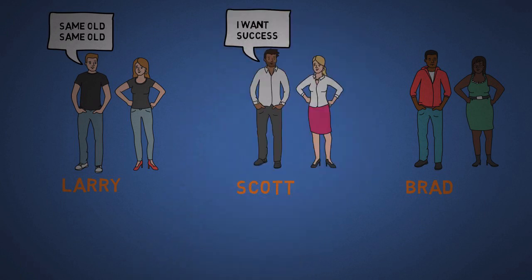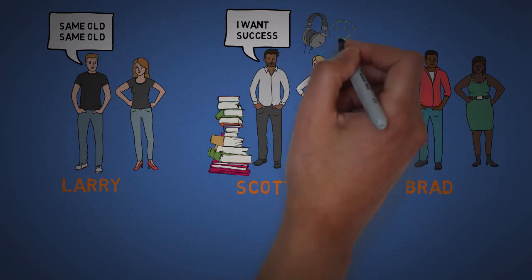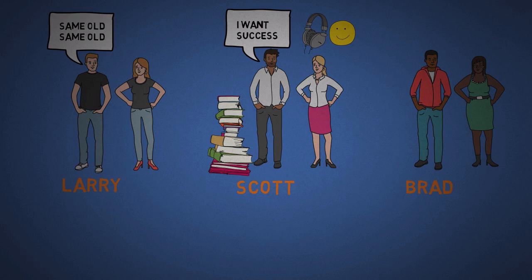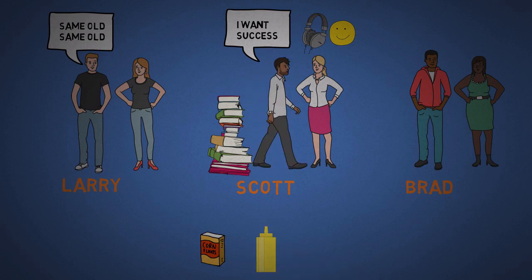Scott begins to make small changes, like reading 10 pages of a good book daily and listening to 30 minutes of something inspirational on his way to work. He cuts 125 calories from his diet, which is like a cup of cereal or switching from mayo to mustard on a sandwich. He also starts walking a few extra thousand steps a day, less than a mile, nothing huge, just stuff anyone can do.